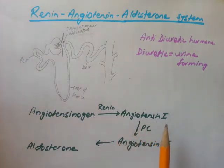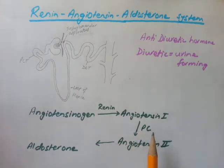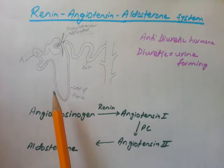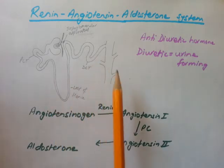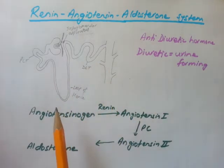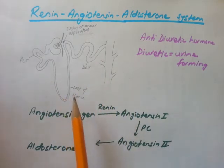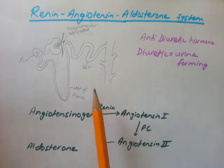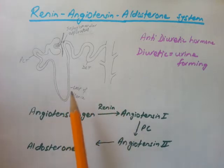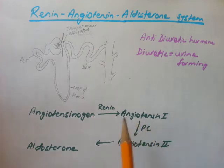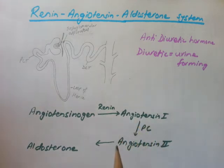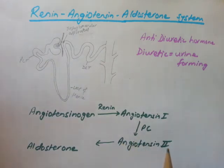When angiotensin I goes to the pulmonary circulation — meaning the circulation that originates in the heart, goes to the lungs, and comes back to the heart — it gets converted to angiotensin II. For reference, systemic circulation goes from the heart to all other body parts and back, while pulmonary circulation is specifically heart to lungs and back.